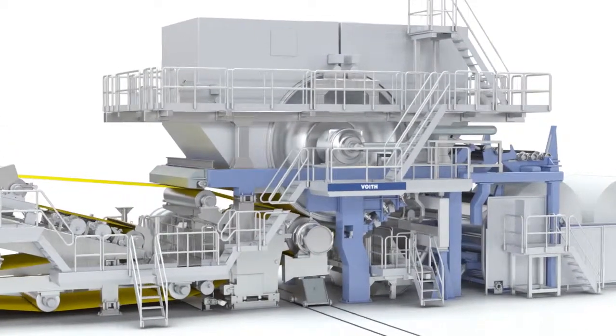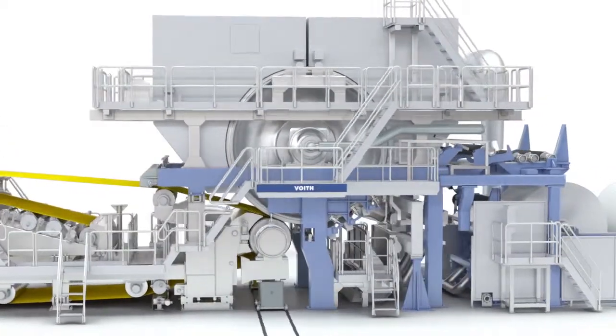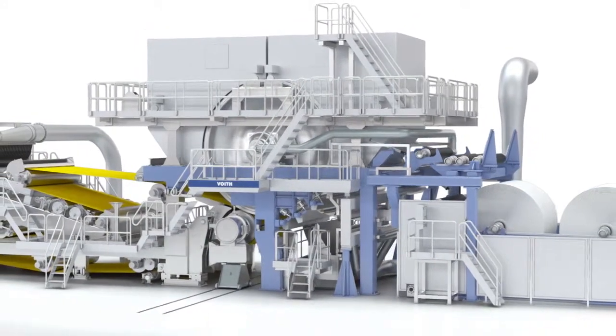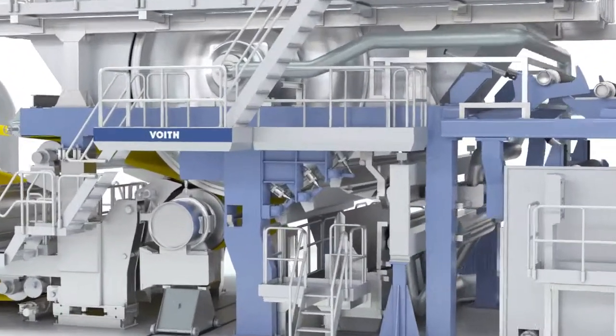In tissue manufacturing, there are several positions along the tissue machine where paper quality can be enhanced. In this context, the creping blade plays a special role.